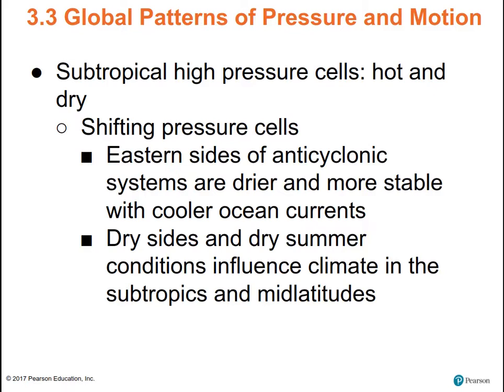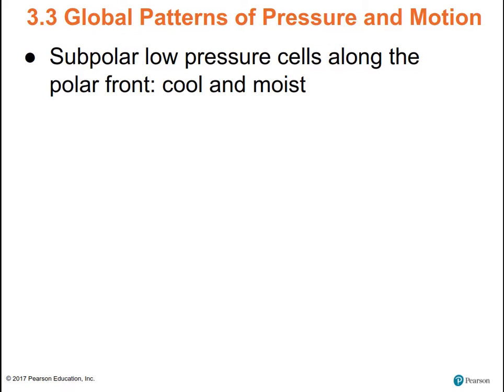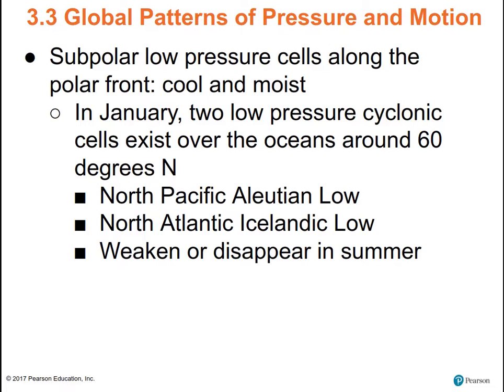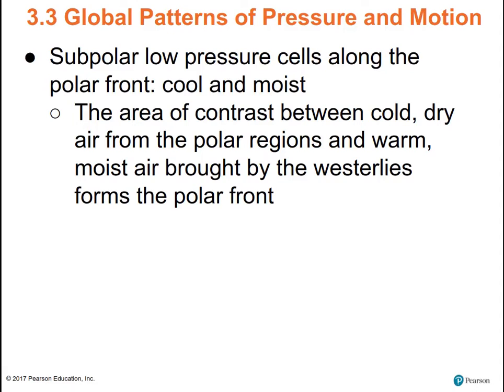The subpolar low pressure cells along the polar front — we're talking about the region between the mid-latitudes and the polar extremes. In January there's the Aleutian low in the North Pacific and the Icelandic low in the North Atlantic. They weaken or disappear in the summertime, giving way to summer drought. These are areas of contrast: cold and dry air coming out of the poles meets warm, moist air coming up with the westerlies, and as those air masses mix and meet, they form storms.